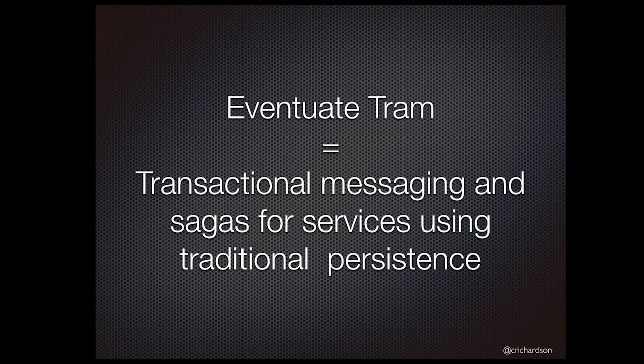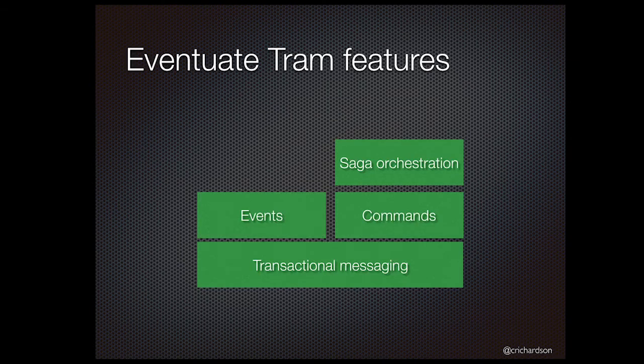Eventuate Tram is a framework that provides transactional messaging, idempotent consumers, and sagas for services that use traditional persistence. It has a layered architecture. The foundation is transactional messaging, which implements the transactional outbox and idempotent consumer patterns. Events and commands build upon transactional messaging, and saga orchestration builds upon commands.